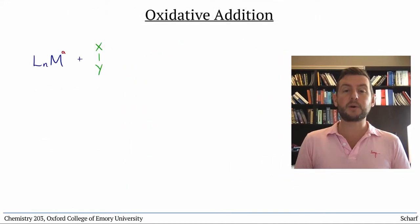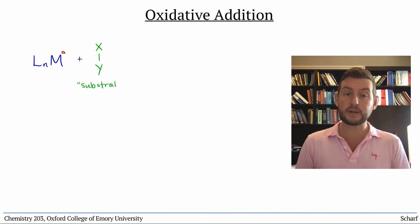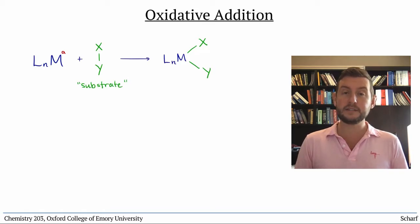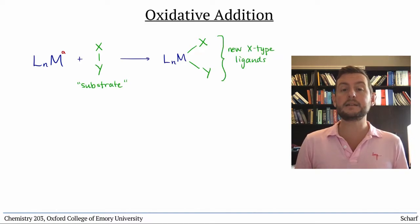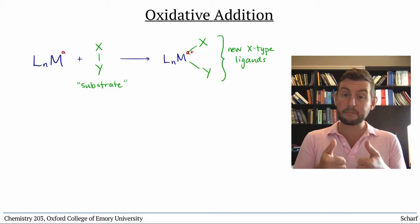Oxidative addition is the process by which a metal complex breaks a sigma bond between two atoms of a substrate, making two new bonds between the metal and the substrate. Overall the metal gains two new X type ligands, meaning that its oxidation state goes up by two.